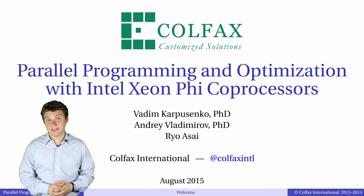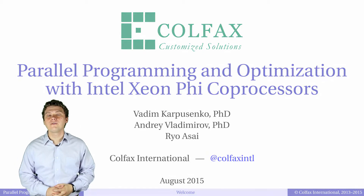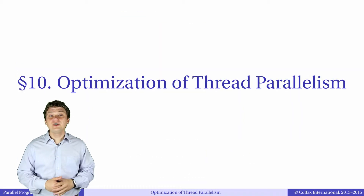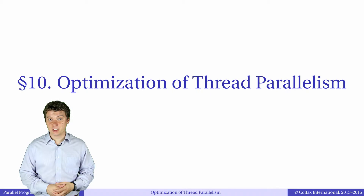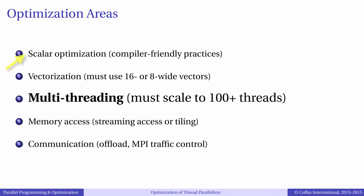Welcome back to episode 5.8 of our video course Parallel Programming and Optimization with Intel Xeon Phi processors. We're continuing the discussion on optimization, now moving on to the optimization of thread parallelism. Earlier we talked about optimization at the level of one vector lane — scalar optimization — then we spent some time on vectorization. Now we move into a higher level of parallelism, considering what happens across the multiple cores of our processor.